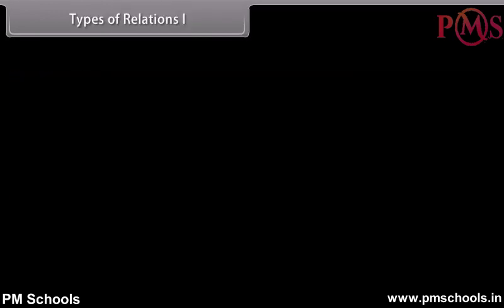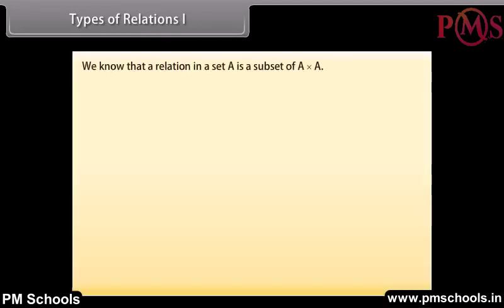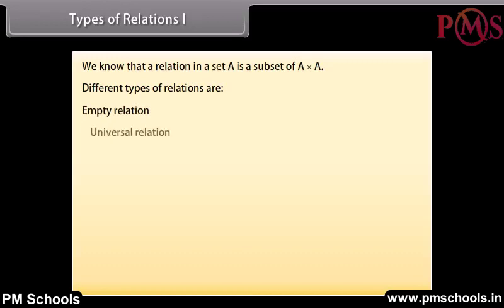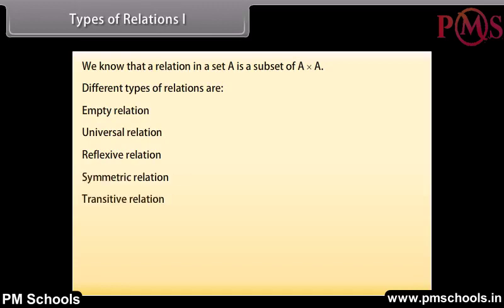Types of relations. We know that a relation in a set A is a subset of A cross A. Different types of relations are: empty relation, universal relation, reflexive relation, symmetric relation, transitive relation, and equivalence relation. Let us go through them one by one.